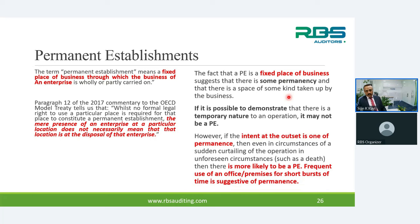If it is possible to demonstrate that there is no permanent nature to an operation, it may not be a PE. In UAE, if an establishment exists for more than six months, it is treated as a permanent establishment. If less than six months, you must still check whether it is a fixed place of business with permanency of nature and ongoing operations, before determining if PE status applies.